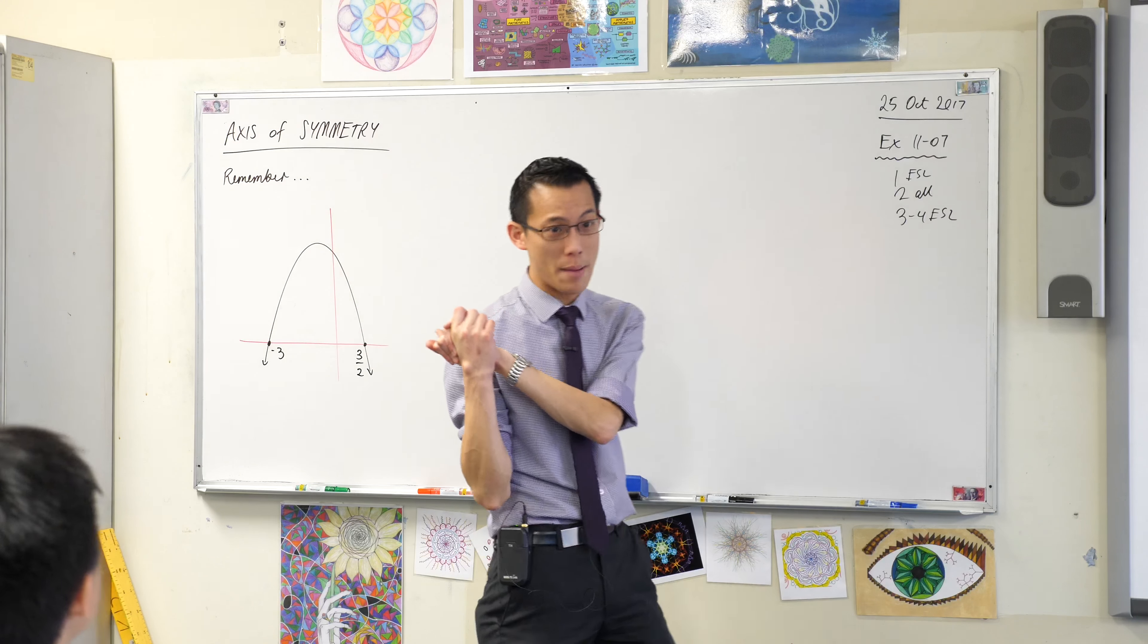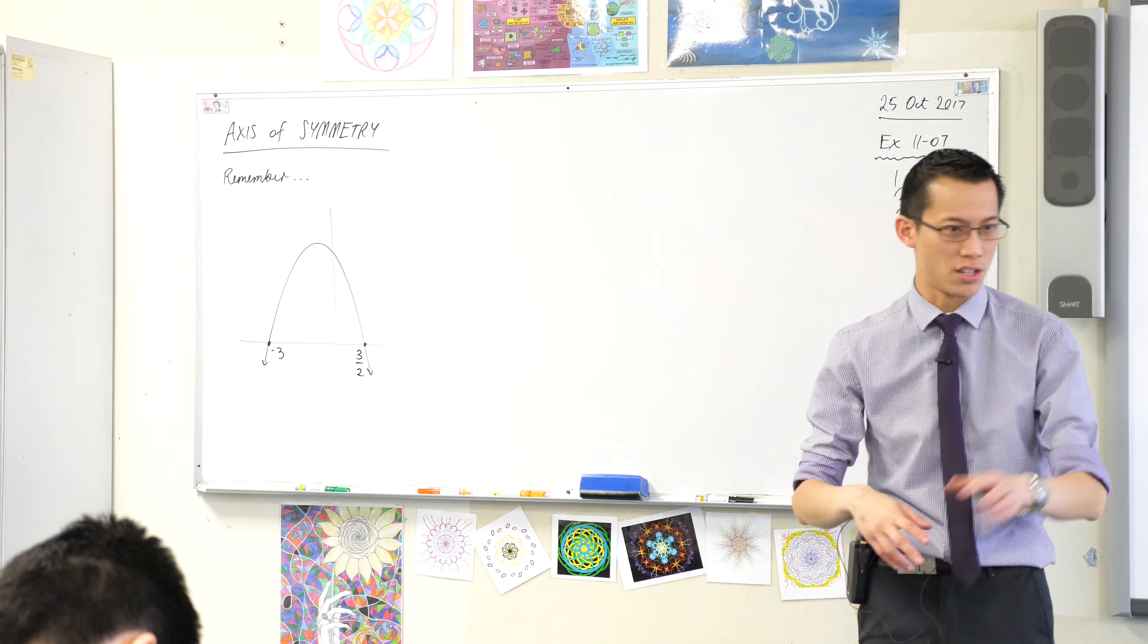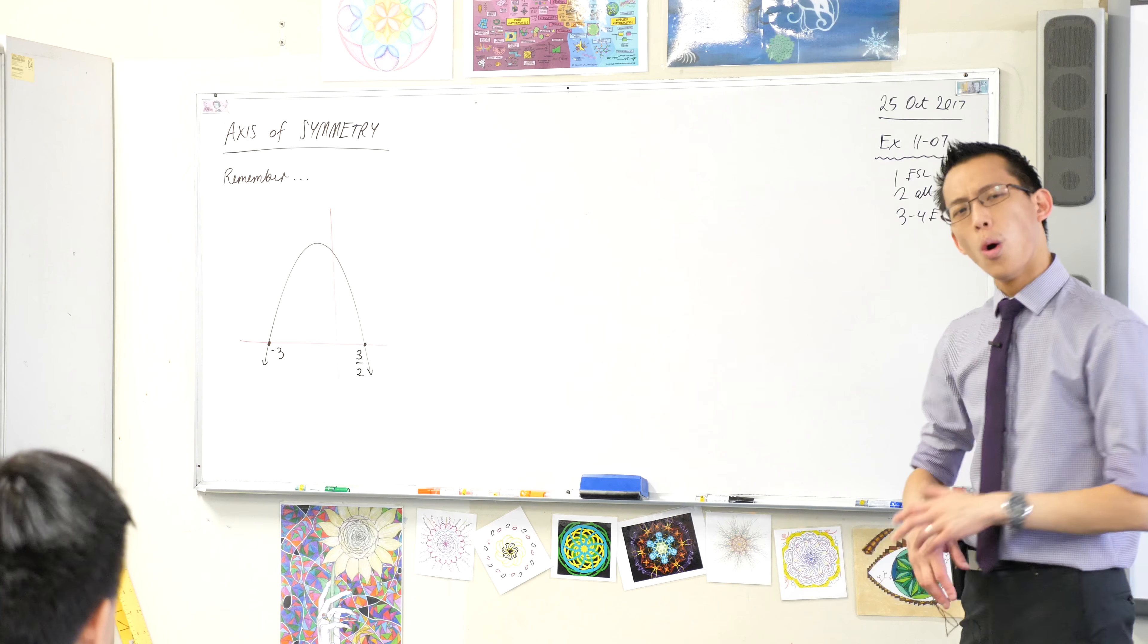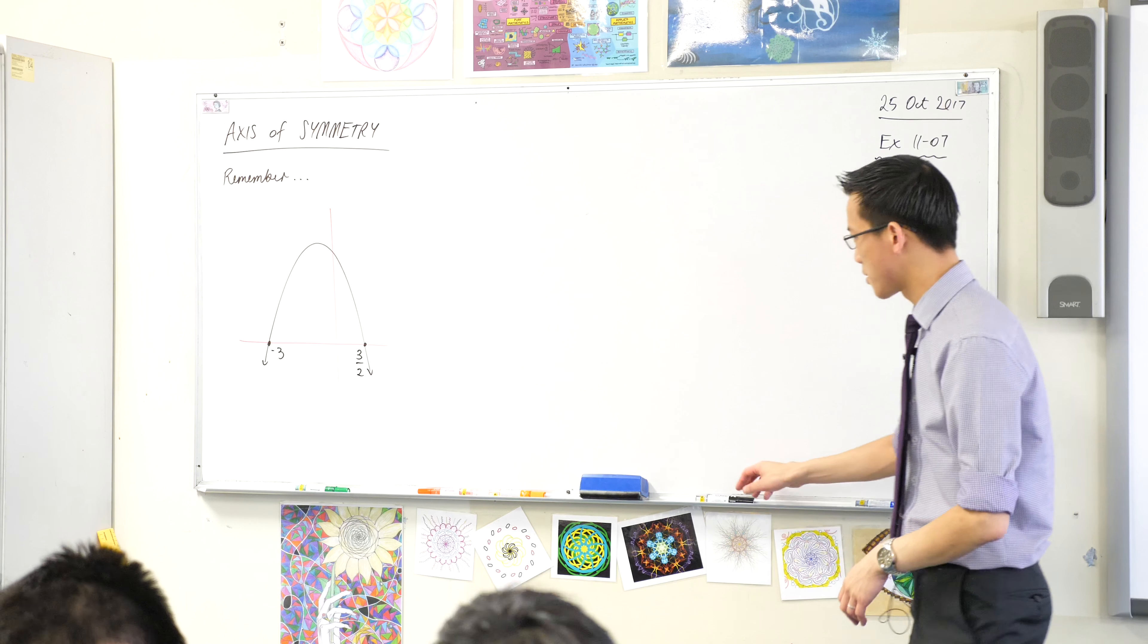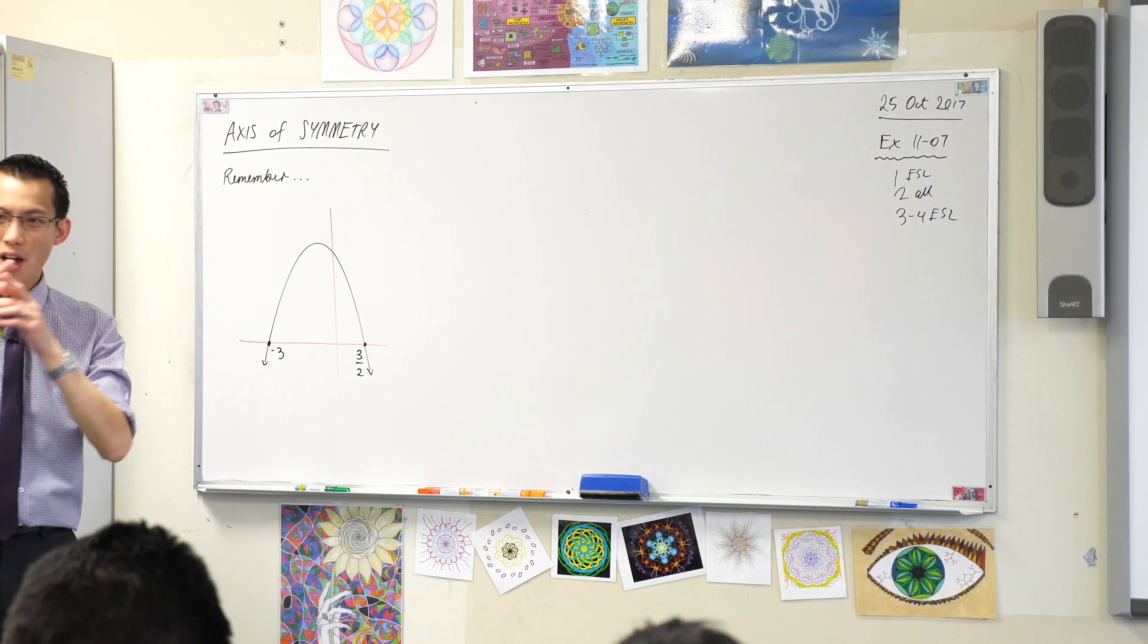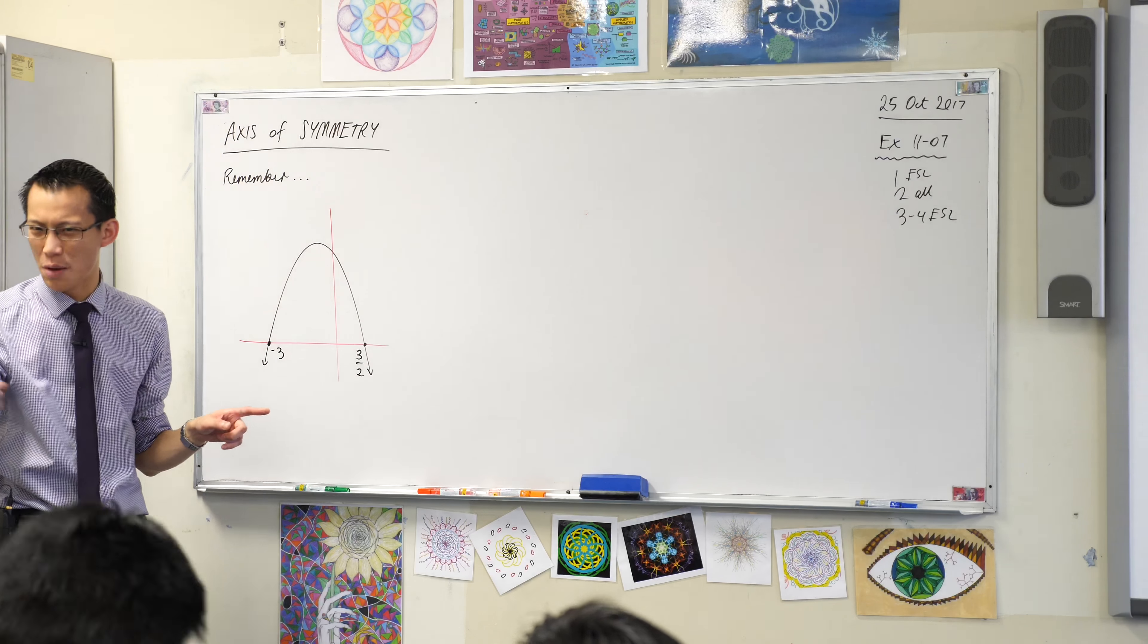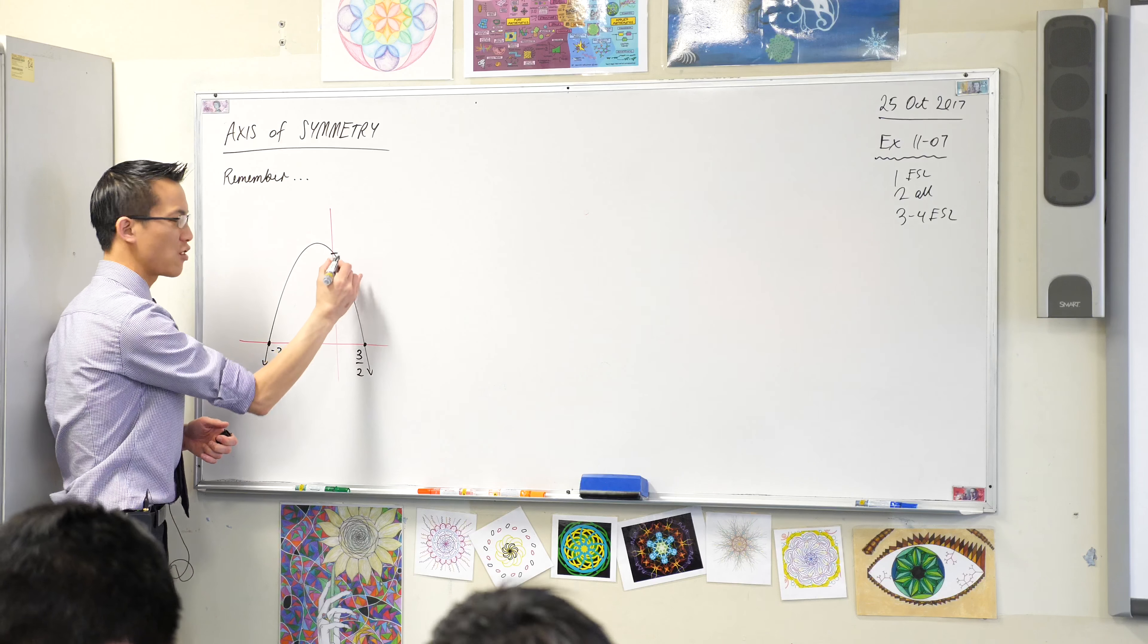So this was actually one of the first parabolas I asked you to do, and we went through it step by step. I actually can't remember what the equation is, but it's not important to me right now. All I want to remind you of was this—we found these two values. Can someone actually turn back a page and tell me what was this value here? I think it was maybe 8?